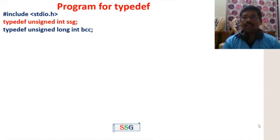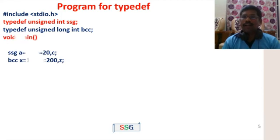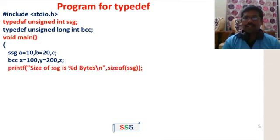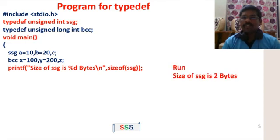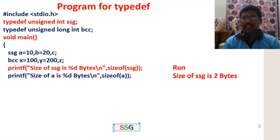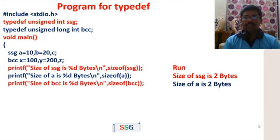For example: typedef unsigned int sg, and typedef unsigned long bcc. So sg represents unsigned int, and bcc represents unsigned long integer. The size of sg (unsigned integer) is automatically 2 bytes, and the size of bcc (unsigned long integer) is automatically 4 bytes.